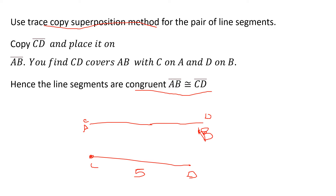Just for checking: I am saying AB is 5 cm, CD is 5 cm, and AB is congruent to CD. If you want to verify, you use the trace copy superposition method. Copy the CD line segment and place it on AB. When completely covered - A covered by C, B covered by D - we can say AB and CD are equal in length and they are congruent. This symbol represents congruence.